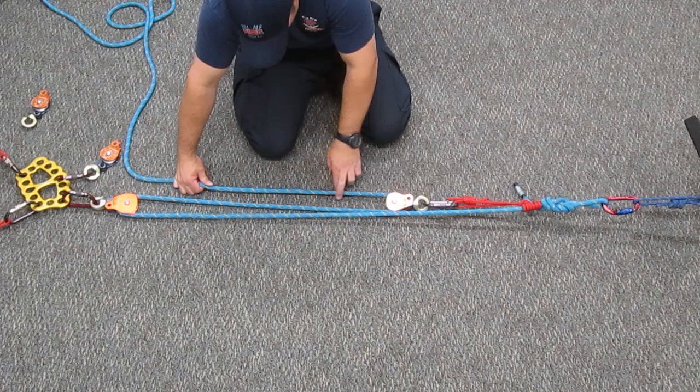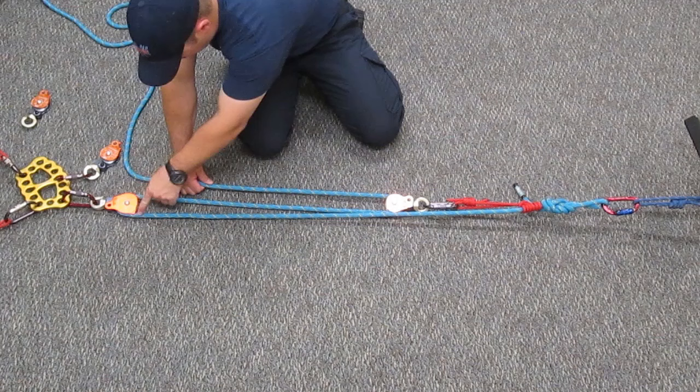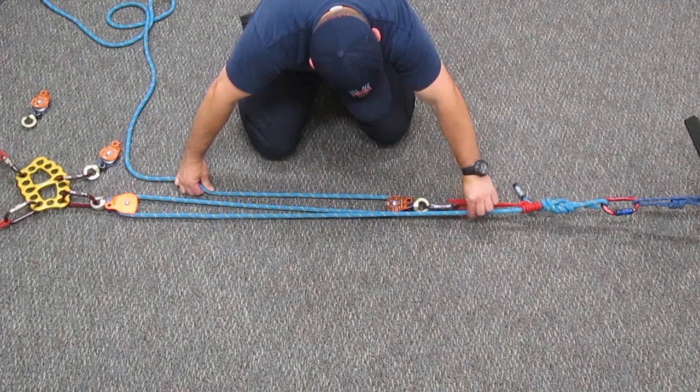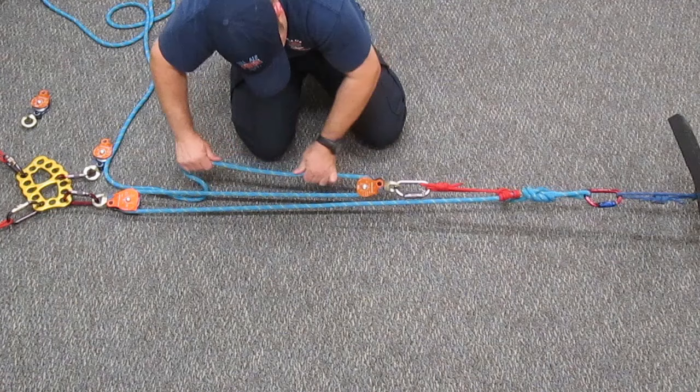We start with one unit of tension on the haul line. It goes through a traveling pulley, so it creates two units of tension through this traveling pulley. That one unit of tension carries on through the change of direction. Then we have the two units of tension meeting up with the one unit of tension on this strand at the load. Our input force is one unit of tension and our output force is three units of tension.